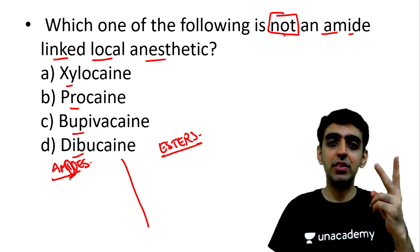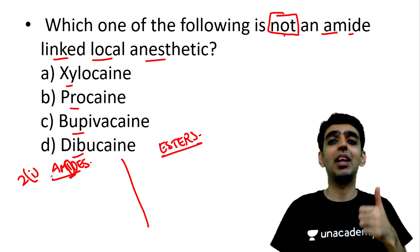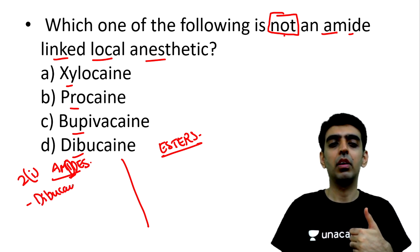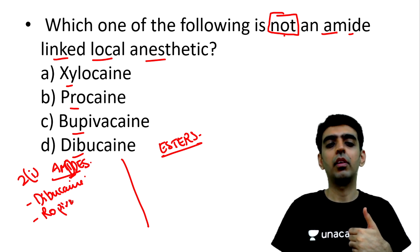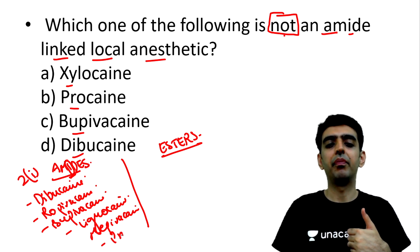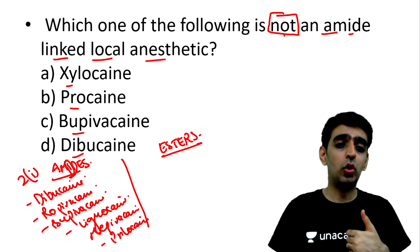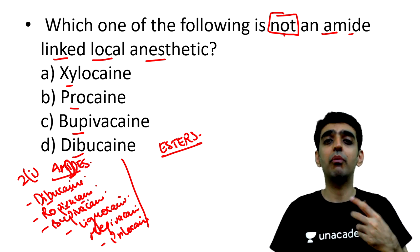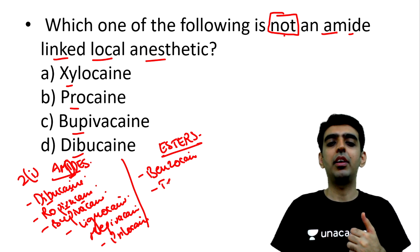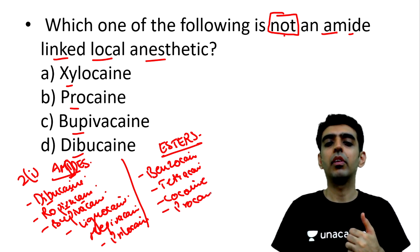All local anesthetics with two i's in their spelling are classified under amide-linked local anesthetics: dibucaine, ropivacaine, bupivacaine, lignocaine, mepivacaine, and prilocaine. The ester local anesthetics are benzocaine, tetracaine, procaine, and chloroprocaine.